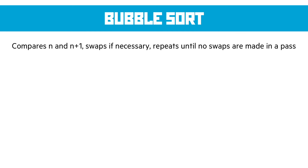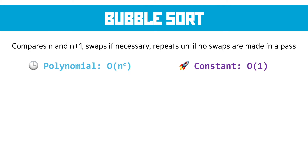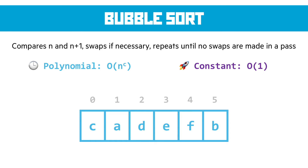Bubble sort is the least efficient in the group. We compare positions n and n+1, swap if necessary, and repeat until we get through the data set in a single pass without swapping anything. It has polynomial time complexity because we repeat passes from start to finish as many times as needed, but it has a constant space requirement — we don't need any additional space to process the data.